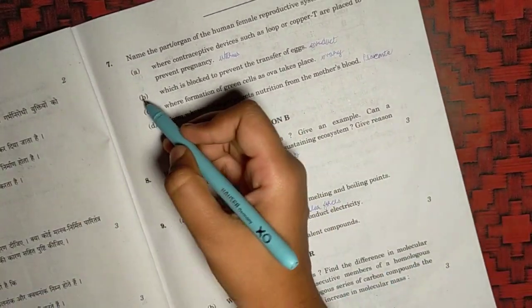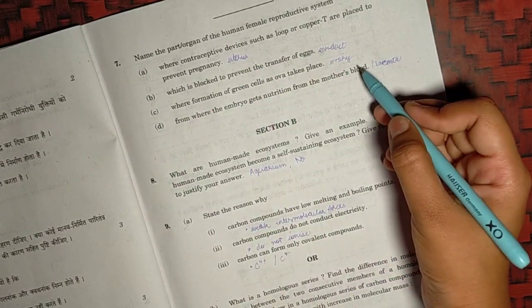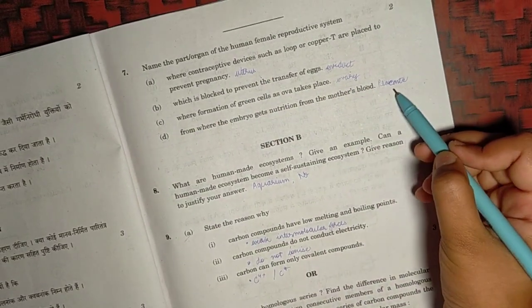For the seventh question, part A, it will be uterus. For part B, it is oviduct. For C, it is ovary. And for D, it is placenta.